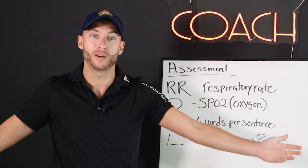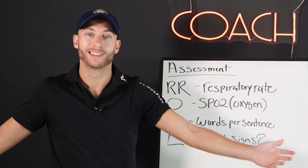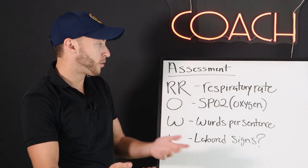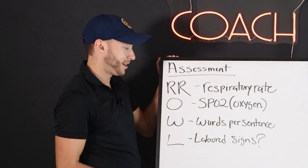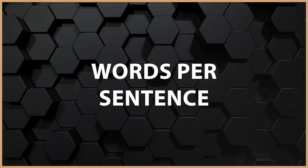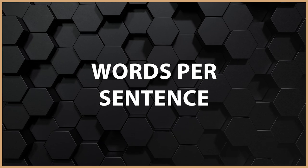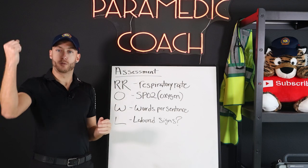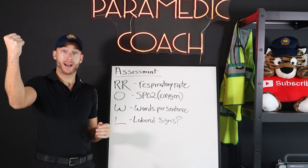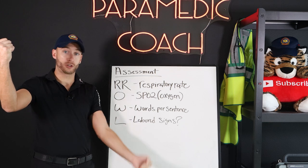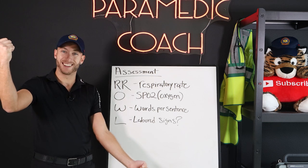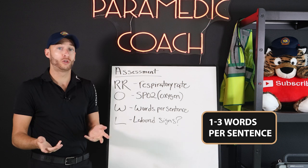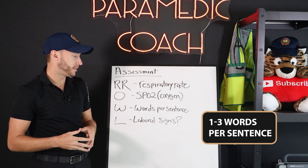For everybody else having an emergency but without COPD or chronic lung disease, get them back to 94–99%, as high as we can. W is for words per sentence — is the patient speaking in full sentences? That's the best outcome. The worst outcome is they can't speak at all. Somewhere in between is one to two, or three word sentences.